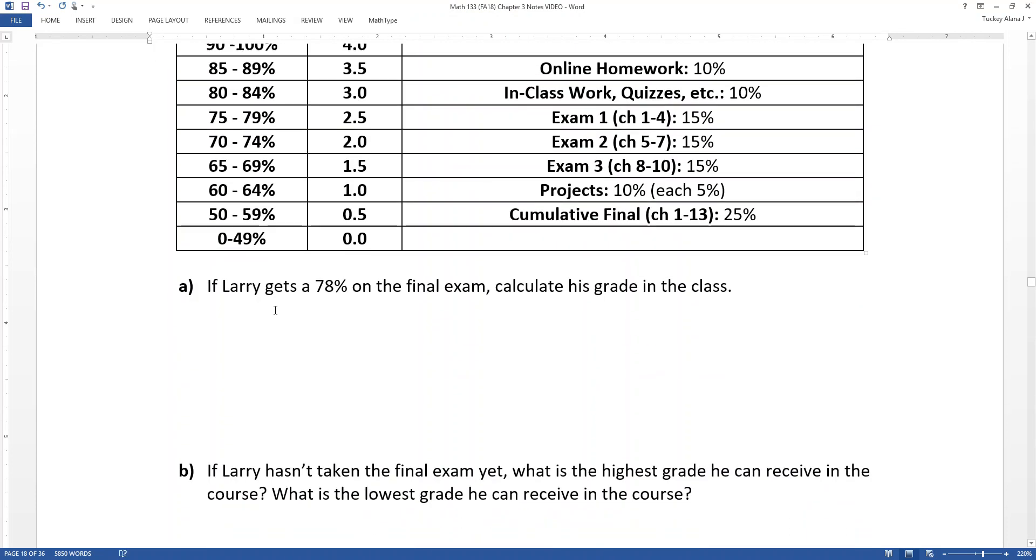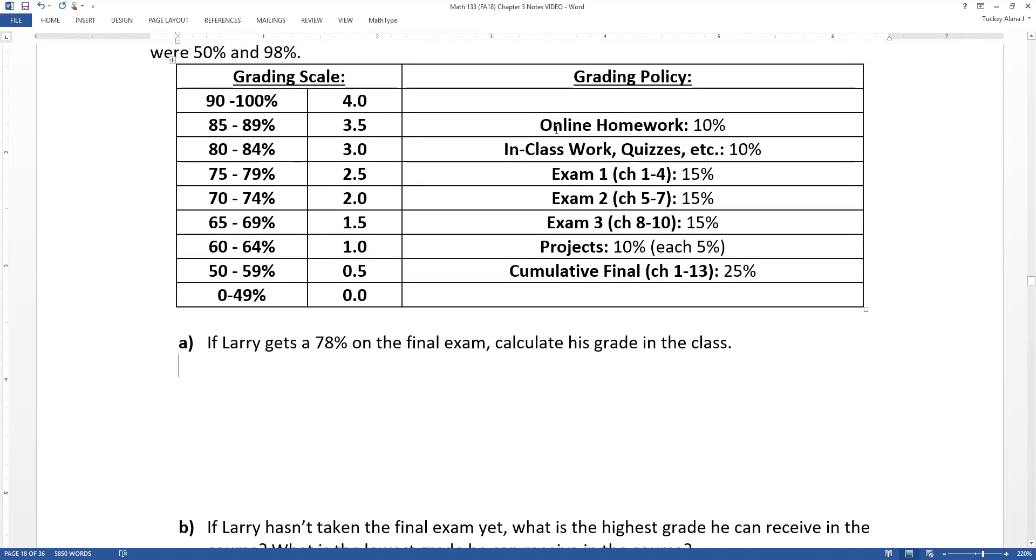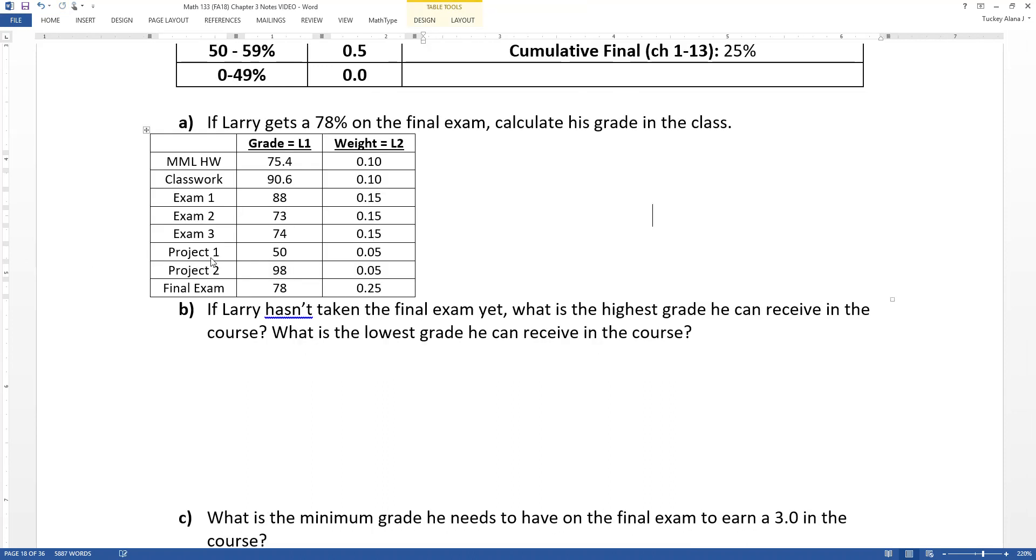Alright, now the first thing you want to do is assume they're going to assume that Larry gets a 78 on the final. Calculate his grade in the class. So what you want to do is you want to make a table of his outcomes and what each of the grade was for each of those items in the grading policy. So you can see here that I've listed all the categories that he could receive a grade for. And I've put Project 1 and Project 2 in there. And then I've got the grades that he received and their weights.